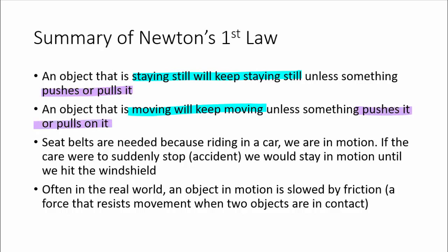One of the examples that you see used frequently is about seat belts. Seat belts are needed because when you're riding in a car, everything in that car is in motion. If it were to stop, everything would keep in motion. An object in motion would stay in motion. So you need those seat belts to keep them connected to the car. And in the real world, when we observe things, we see that an object is often slowed down. That's due to friction. Friction is a force that resists movement whenever two objects are in contact. Remember that that could be a solid, a liquid, or a gas.